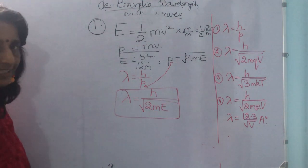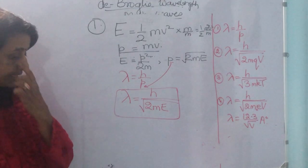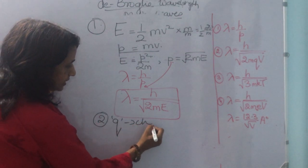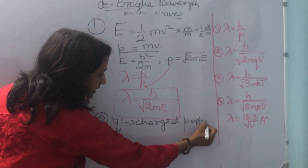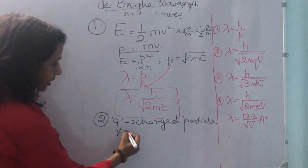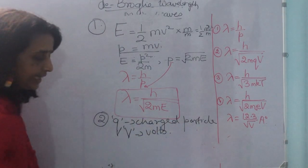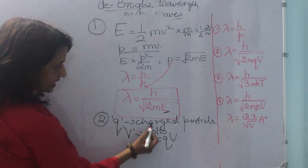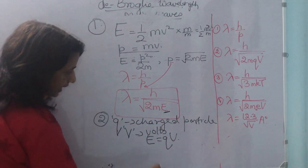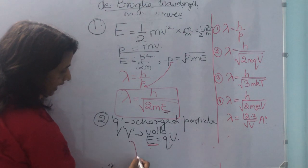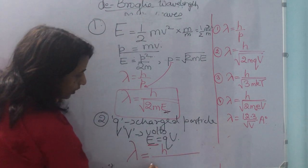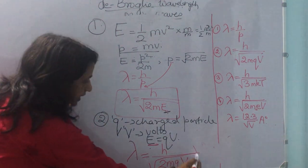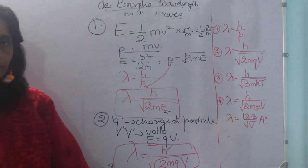Similarly, if a charged particle carrying charge q is accelerated through a potential difference of V volts, then we use E = qV. Substituting qV for E in lambda = h/√(2mE), we get lambda = h / √(2mqV). This is our second expression: lambda = h / √(2mqV).